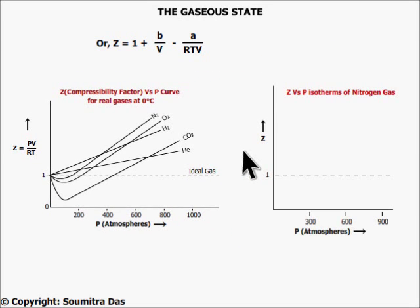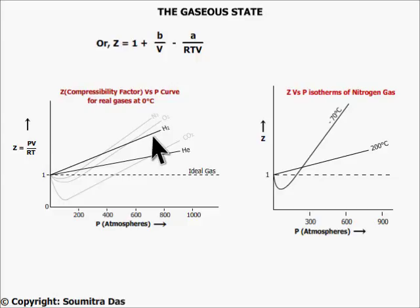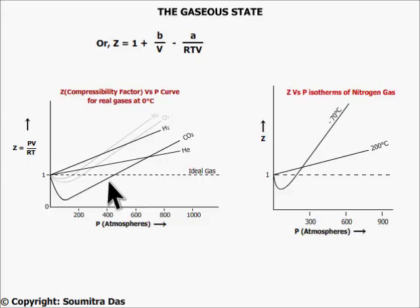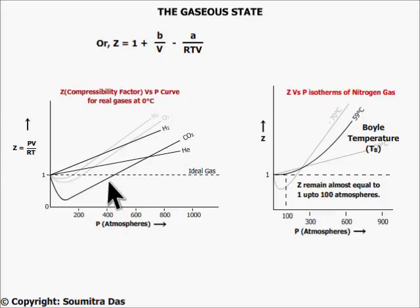Now let us see the effect of temperature. When we consider the nitrogen gas curve at different temperatures, the isotherms obtained are of this form. At higher temperatures, the intermolecular attraction is negligible and the curve resembles that of hydrogen. At low temperatures, the A/RTV factor comes into play and at low pressures Z is less than one. As pressure increases, volume decreases and the B/V factor takes over, and the curve rises. At an intermediate temperature, Z remains almost equal to one up to an appreciable pressure range — this temperature is called the Boyle temperature. This occurs when the two factors are equal to each other. Setting T equal to the Boyle temperature Tb, we get Tb = A / (R·B).